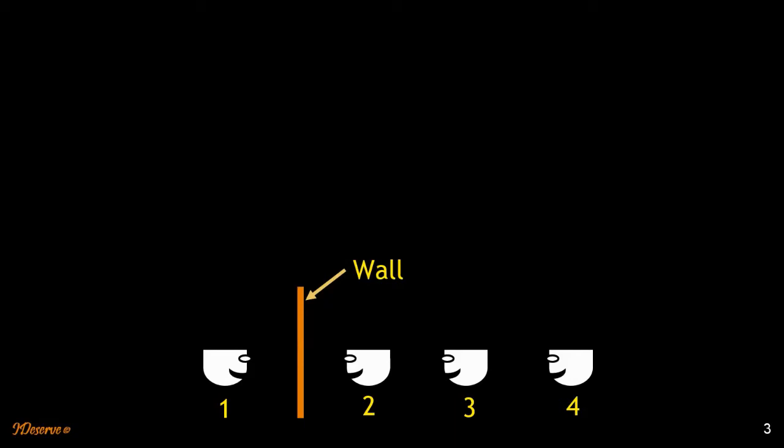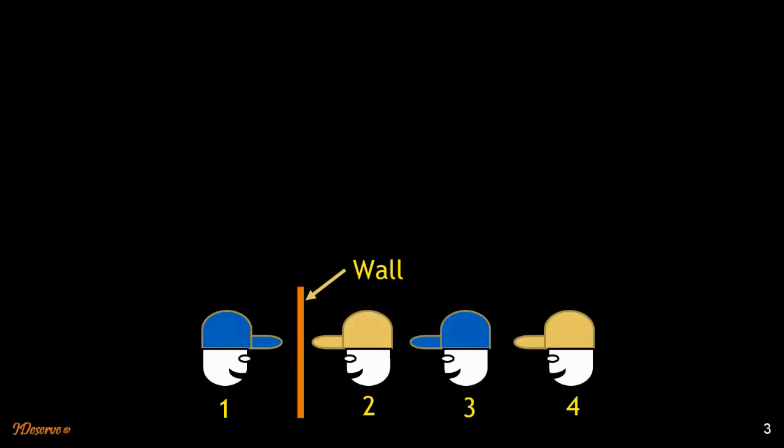In this puzzle we have four prisoners. We have given each one of them a hat. Number one has a blue hat, two has yellow, three has blue and four has yellow.